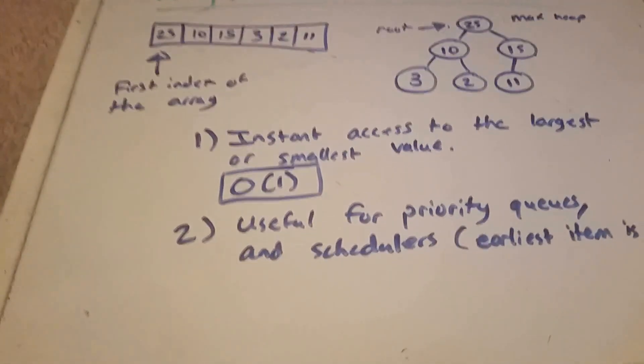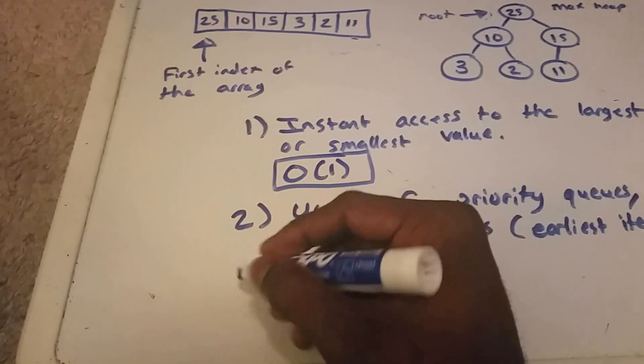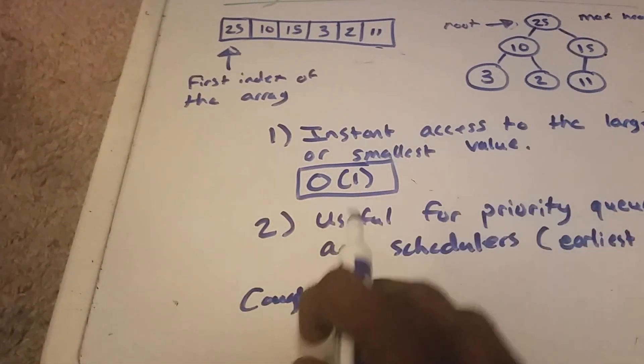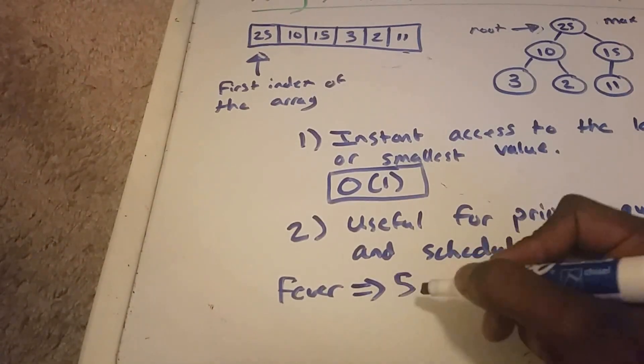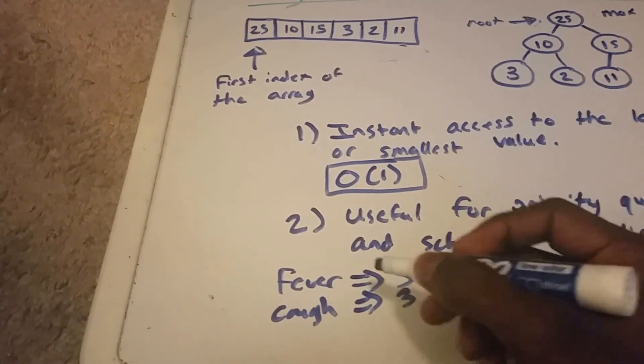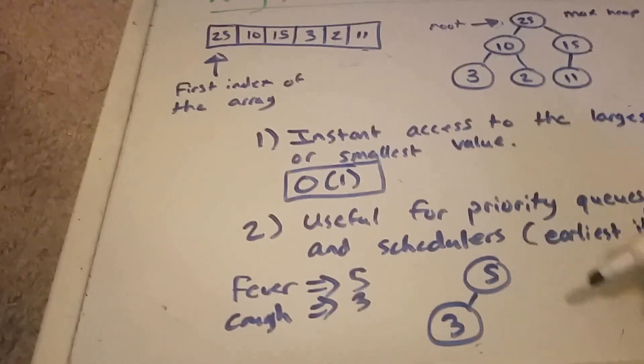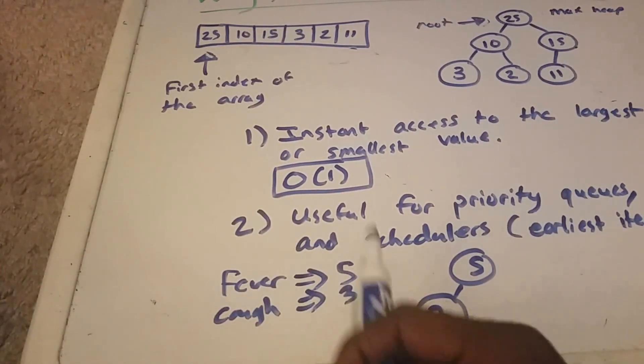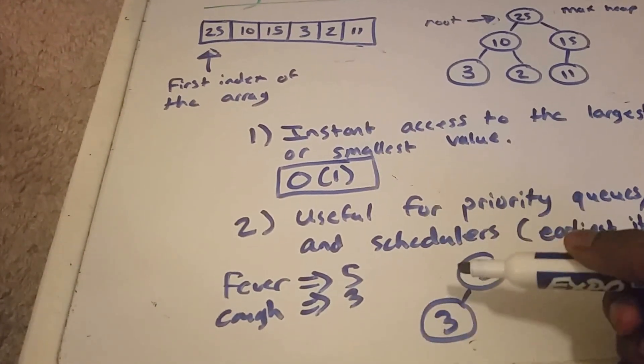So what's some practical applications of this? Maybe you have somebody at the hospital, one person comes in with a fever, so their priority would be something like 5. And then one person comes in with a cough, their priority will be 3. So if we were to just take this and put it in the heap, we know that we can just pop off the 5 here, and we scheduled the person with the fever first. Even if the person with the cough came first, we will handle the person with the fever first because they have the higher priority.